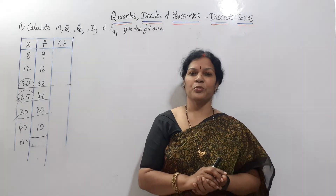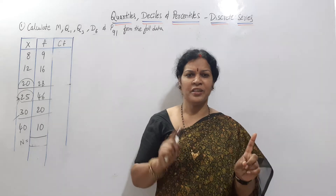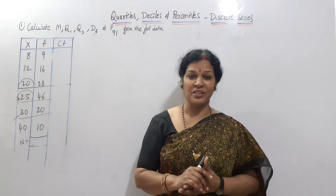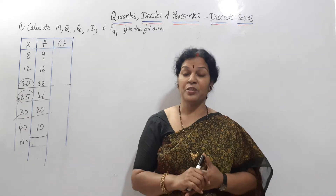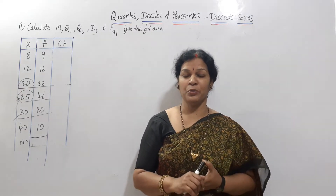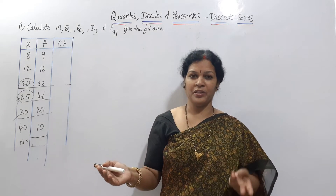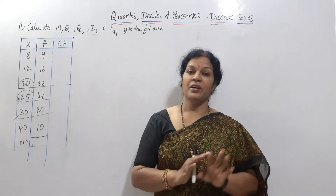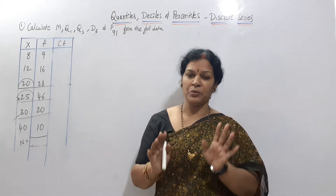Today we will use discrete series. The formula is the same — individual and discrete formula is the same, just as we have the same in the median for individual and discrete. The formula is the size of (n+1)/2 th item. This is also the same here for Q1, Q3, deciles, and percentiles — the same as individual formulas.